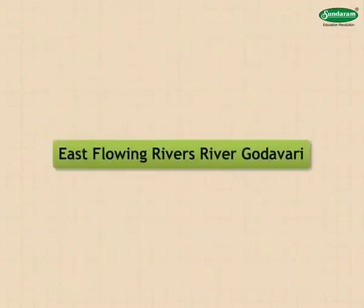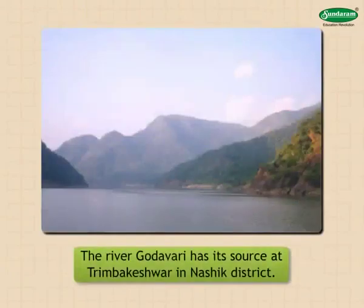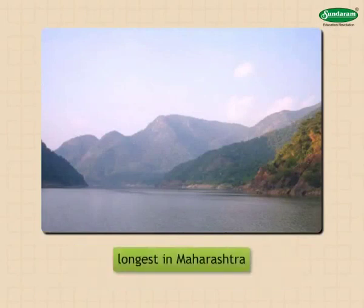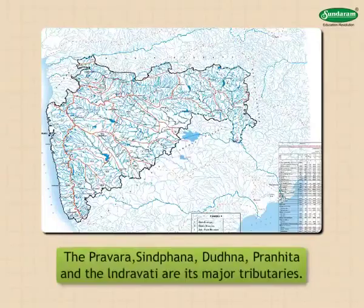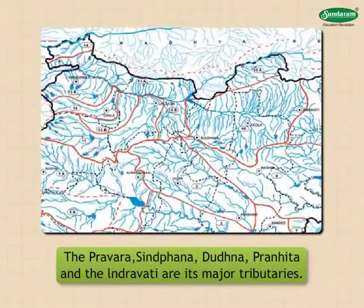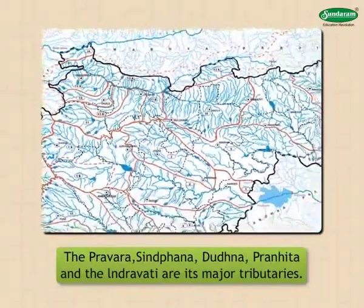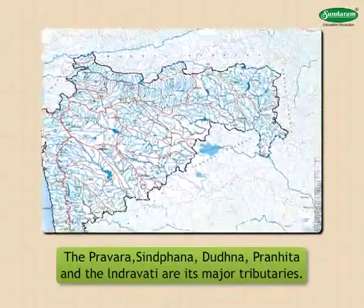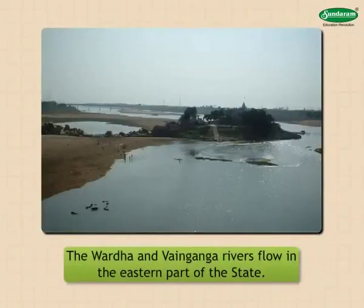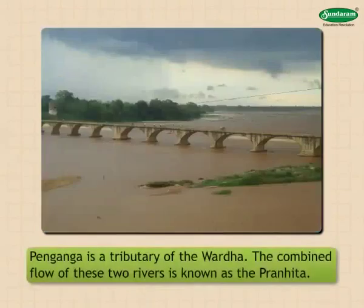East-flowing rivers: River Godavari has its source at Trimbakeshwar in Nashik district. This major river is also the longest in Maharashtra, and a large part of Maharashtra is occupied by its basin. The Pravara, Sindhphana, Dudhna, Pranita, and Indravati are its major tributaries. The Godavari further flows through Andhra Pradesh before entering the Bay of Bengal.